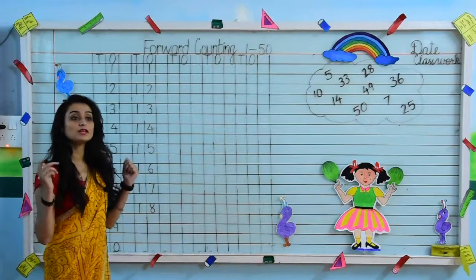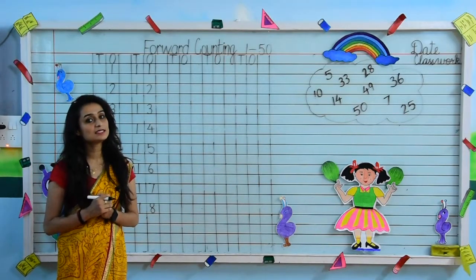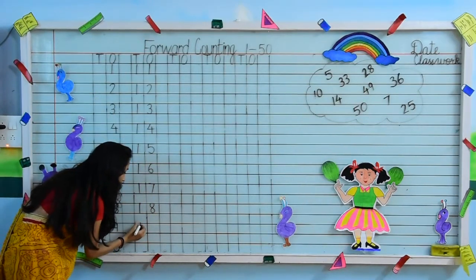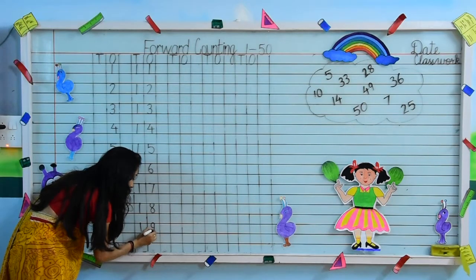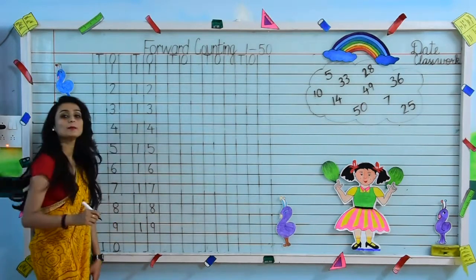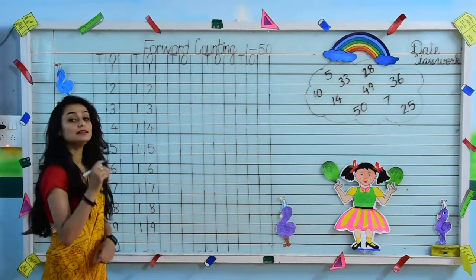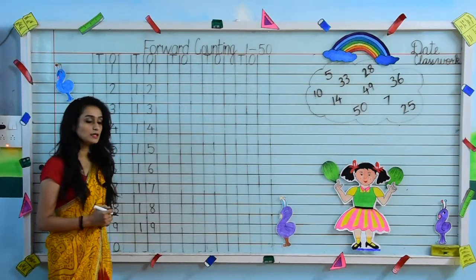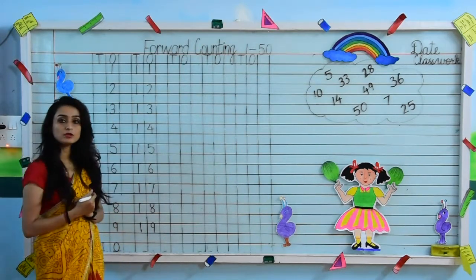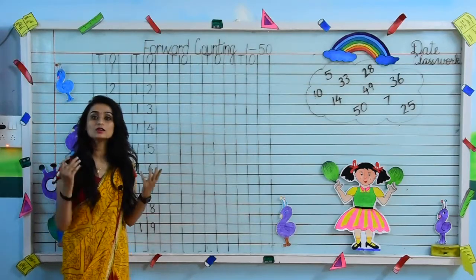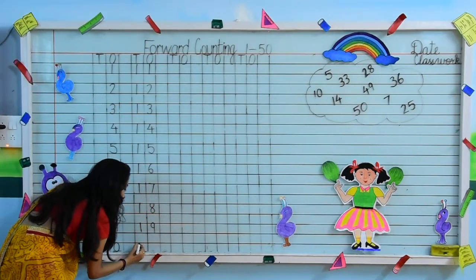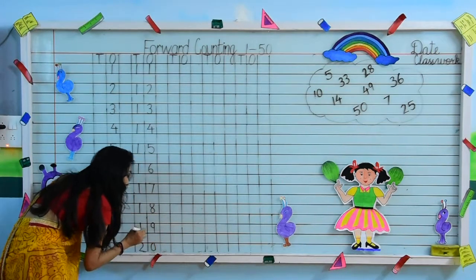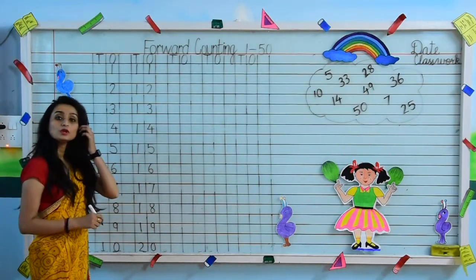Tell me what comes after 18, kids. After 18, 1, 9 — 19 is the next number. Now, tell me which is the last number of this line. We have written 10, so the next round number is 2, 0 — 20.